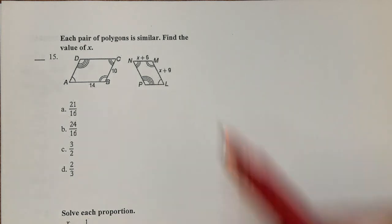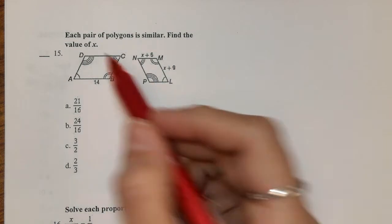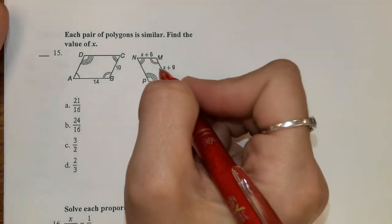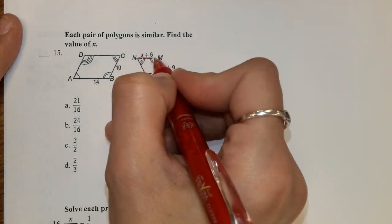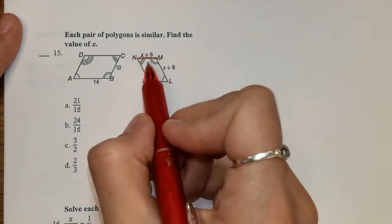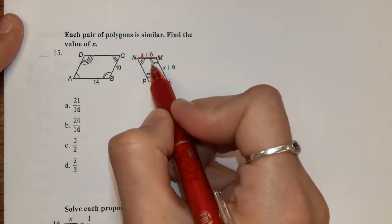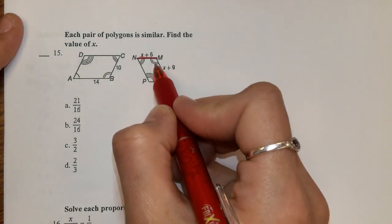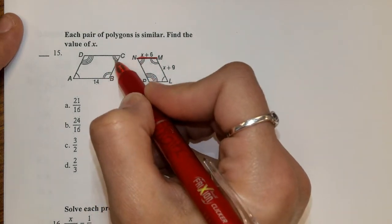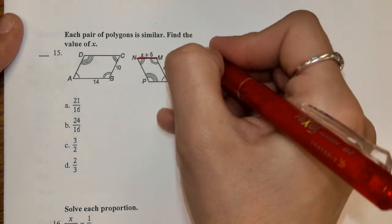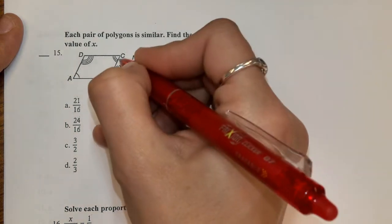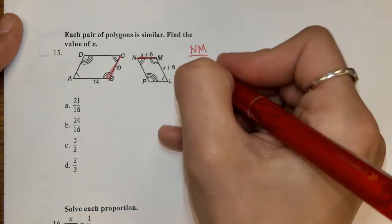We want to find, these are similar polygons, we want to find the value of X. So here, we see that X is at MN. So we need to find the same side over here on the other one that is between the 2 arcs and the 3 arcs. So here's my 2 arcs and my 3 arcs. So NM is going to correspond with CB.